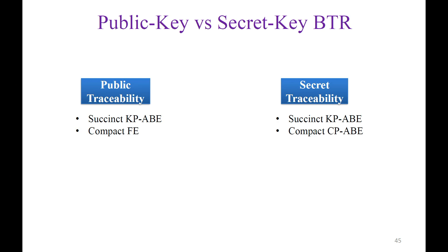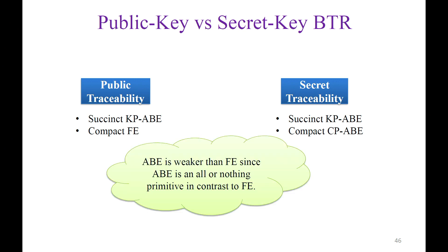To compare techniques: for the stronger notion of public traceability, we rely on compact functional encryption. For the weaker notion of secret traceability, we use only special ABEs. Attribute-based encryption is much weaker than functional encryption since ABE is an all-or-nothing primitive, in contrast to FE. So we achieve our weaker notion by relying on weaker primitives.